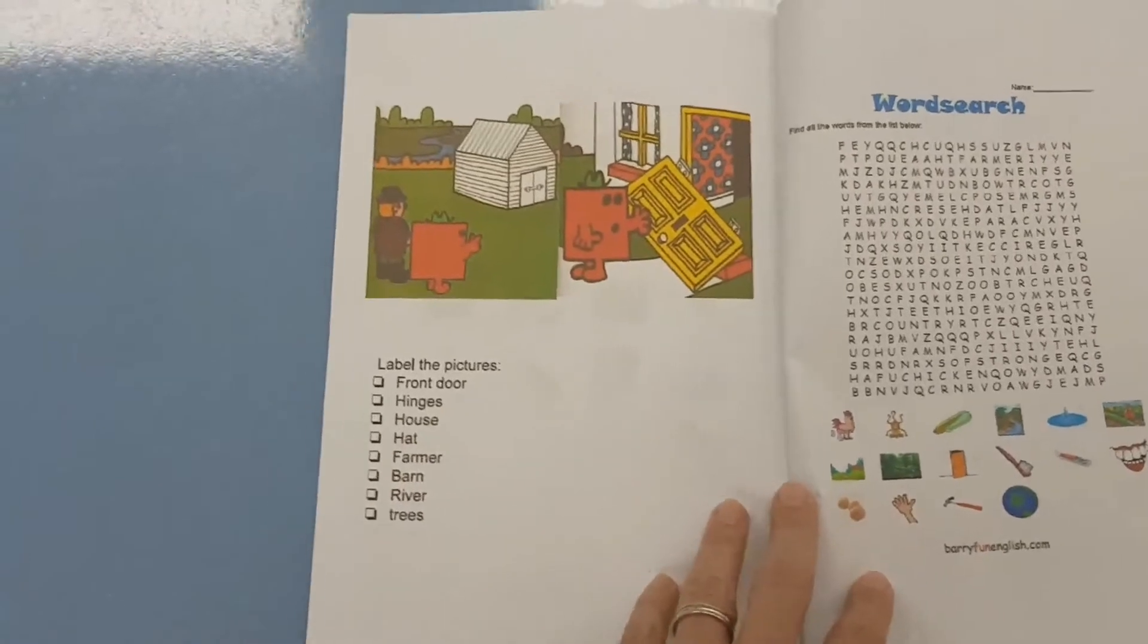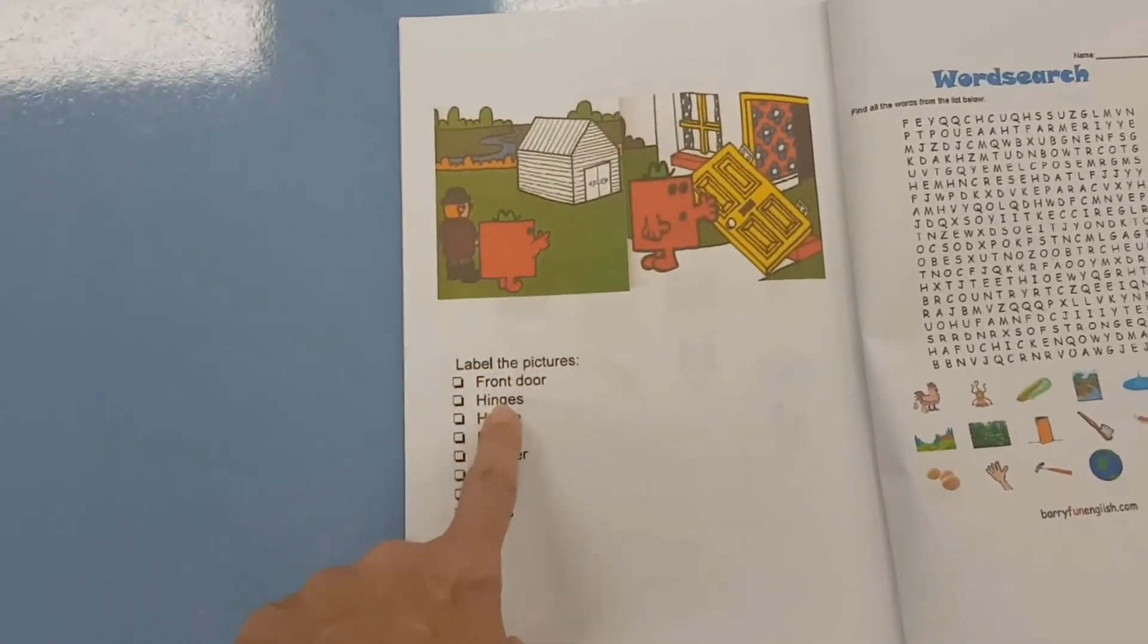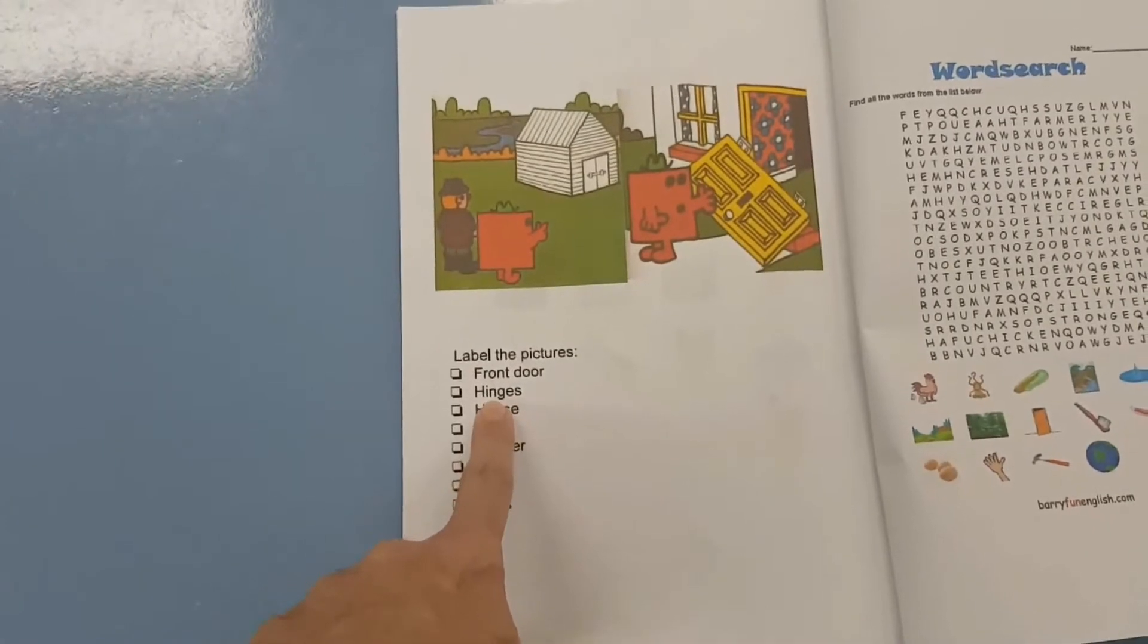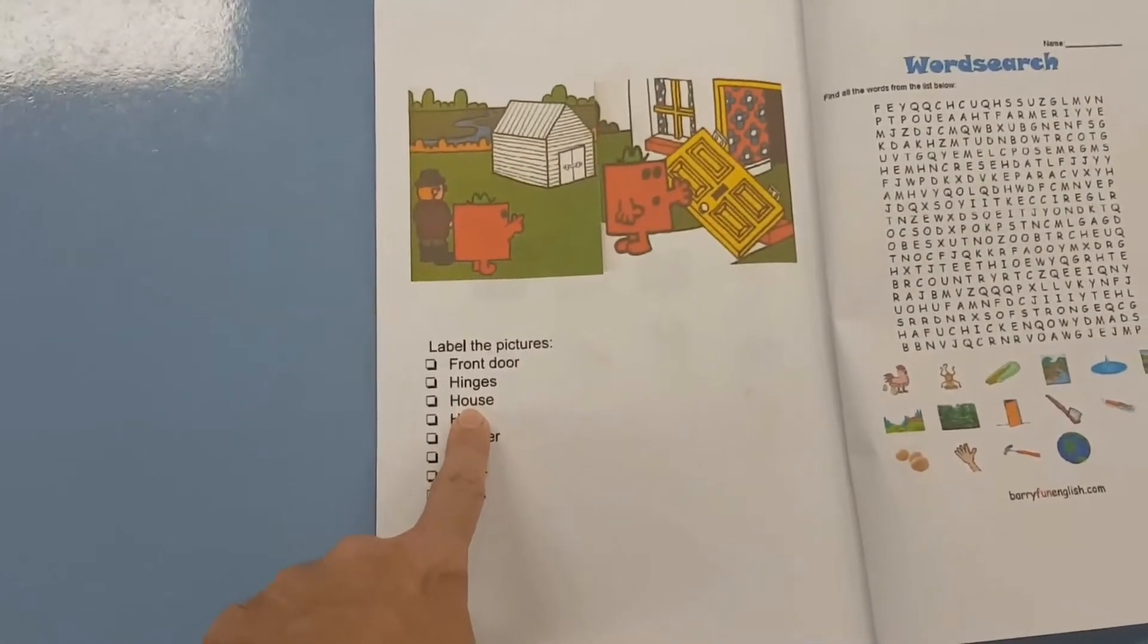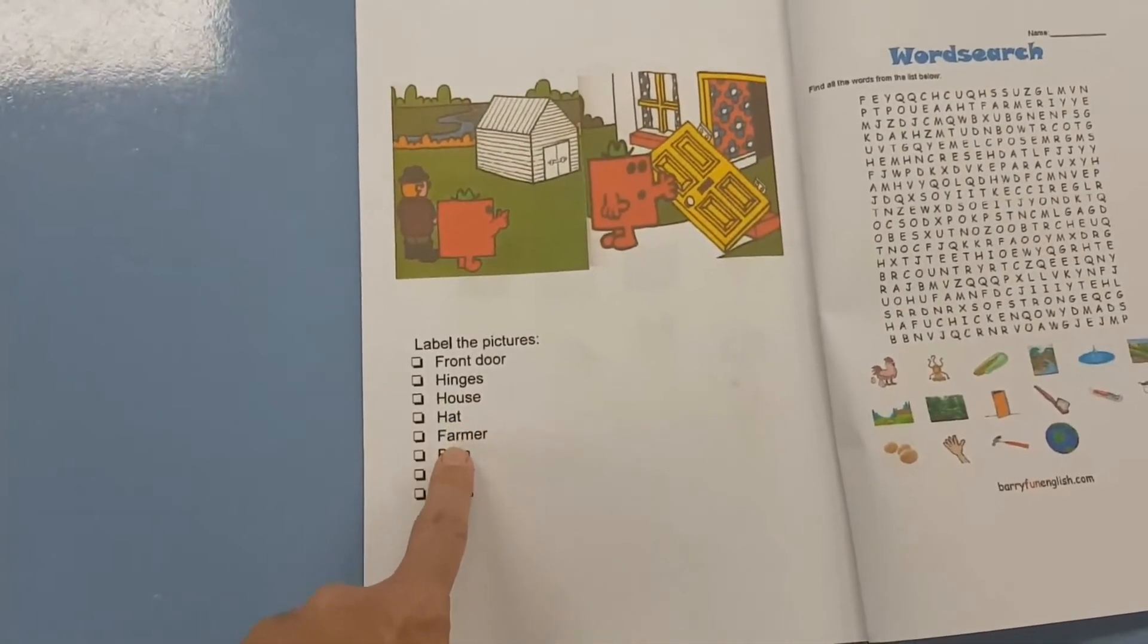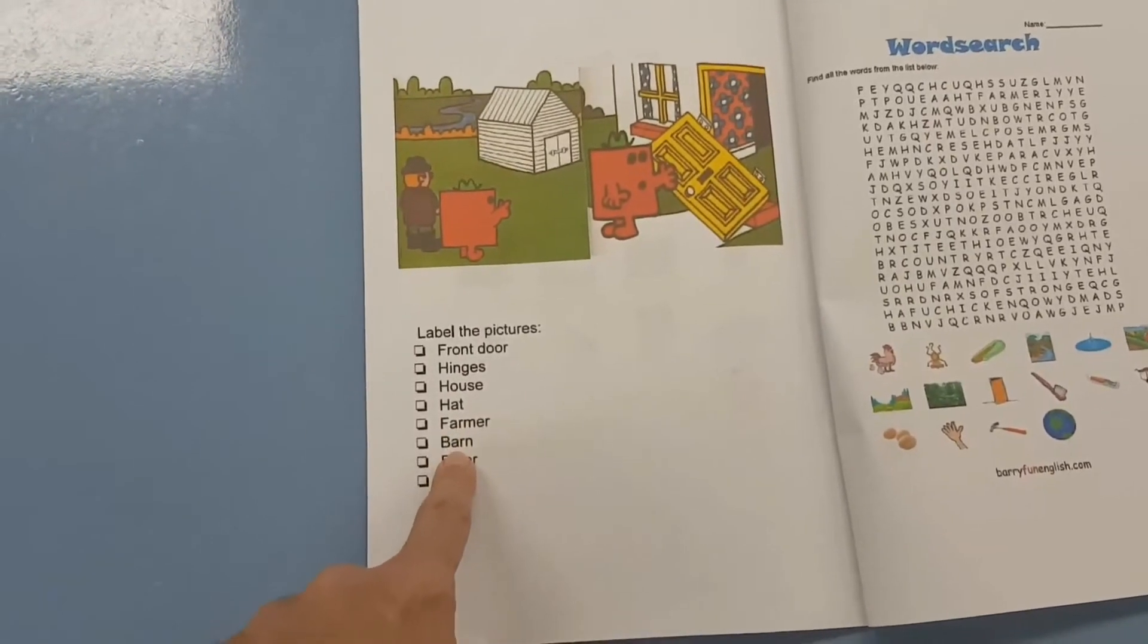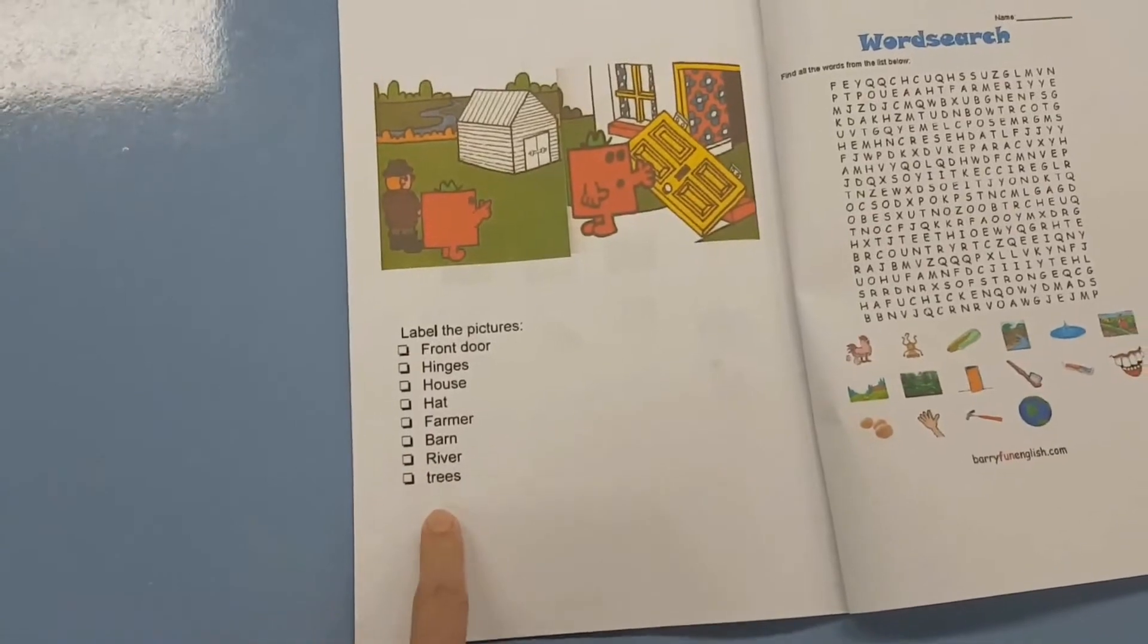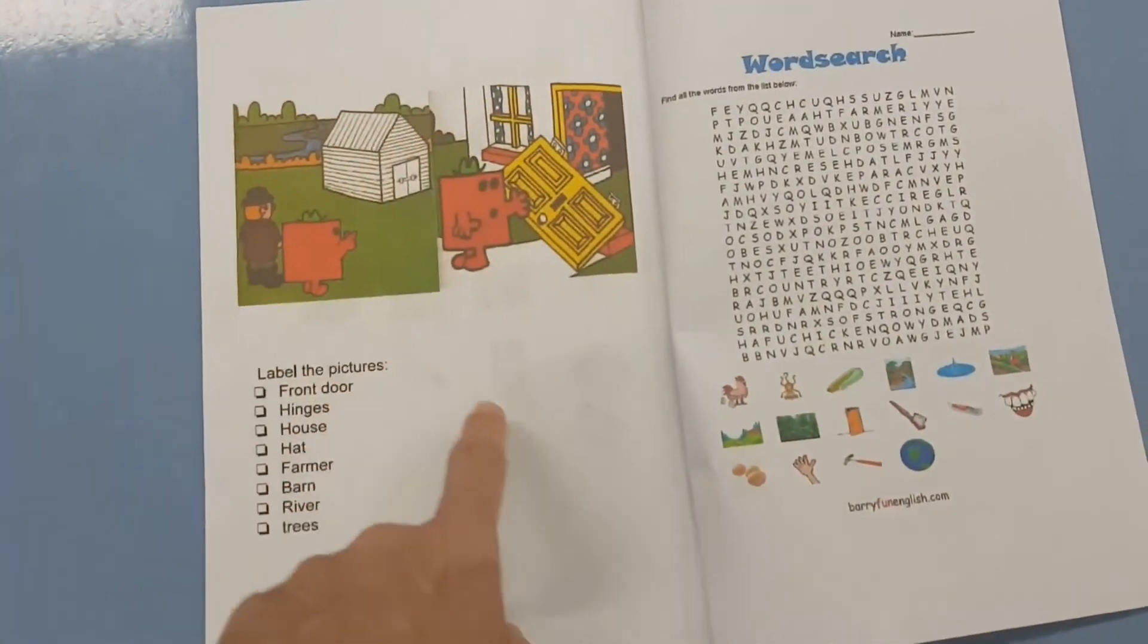And then on the next page, label the picture. Here, find the front door, hinges, house, hat, farmer, barn, river, trees. Find those things in this picture.